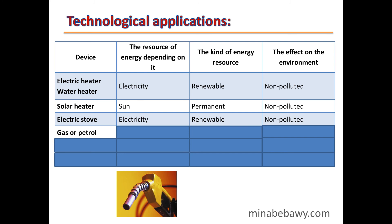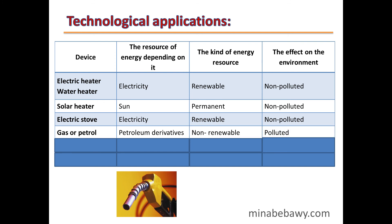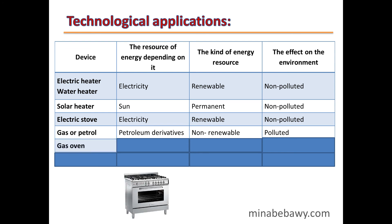Gas or petrol is a petroleum derivative. Petrol is a non-renewable source of energy and causes pollution to the environment. A gas oven uses natural gas or butane.